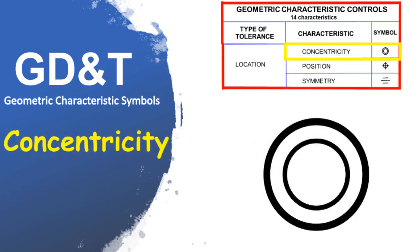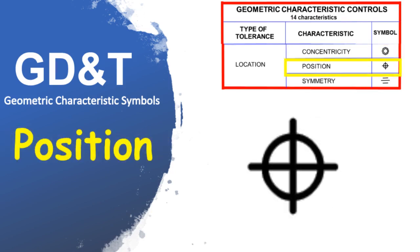Concentricity, sometimes called coaxiality, is a tolerance that controls the central axis of the referenced feature to a datum axis. Position tolerance defines a zone in which the center axis or center plane of a feature of size is permitted to vary from true position.